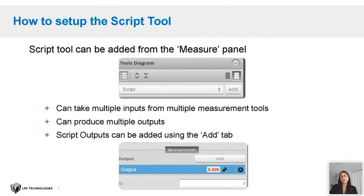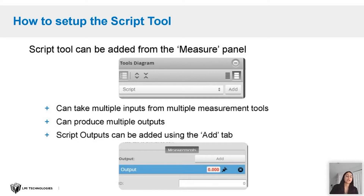Script tools can be added or removed in the same way as other measurement tools. It can be added from the measure panel. Once you click on the measure panel, you can select it from the dropdown in the tools diagram option and add the tool. Scripts also support multiple inputs from multiple measurement tools and also support multiple outputs. Multiple outputs can be added using the add button when you add the script tool. Each script output has an index and an ID associated with it.